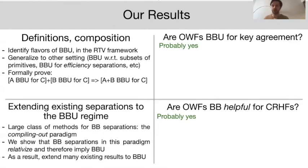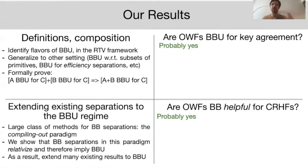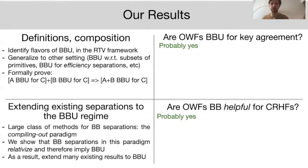Then we ask which black box separation methods from the literature can be generalized to provide black box uselessness results. We identify one large such class — the compiling out paradigm. In this paradigm, black box separations relativize, meaning the separation can still be carried out in the presence of an auxiliary oracle, which implies the stronger result of black box uselessness. This gives us a large number of uselessness results for free.